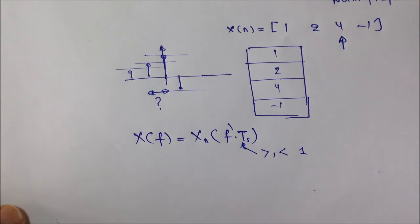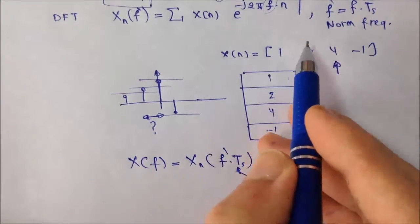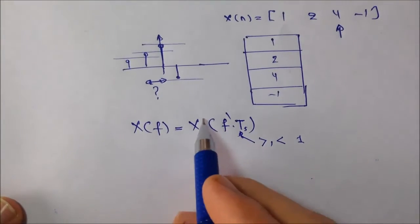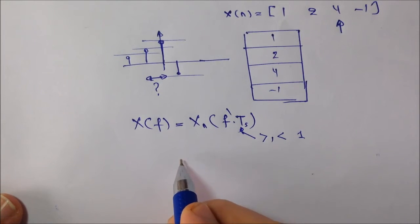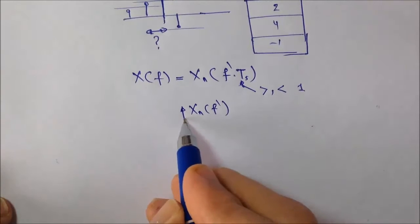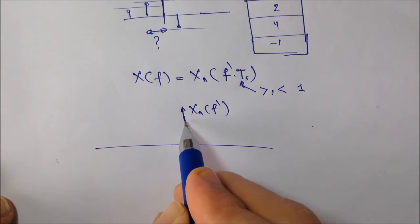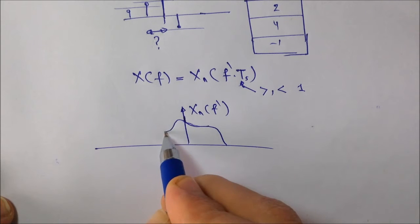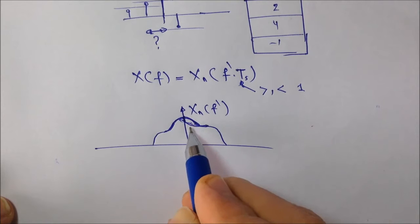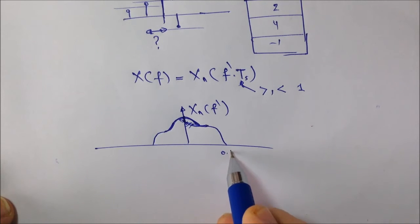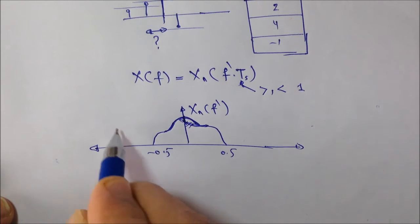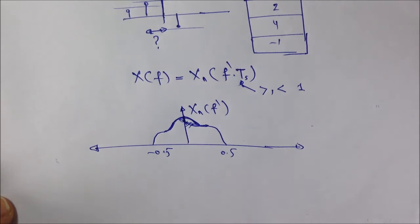For example, using this sequence, if we've calculated the DFT, the discrete Fourier transform, X normalized of F prime for this sequence, and it appeared like this, I don't know, from 0.5 to minus 0.5, one cycle. Remember, it's supposed to be a periodic function that repeats itself.